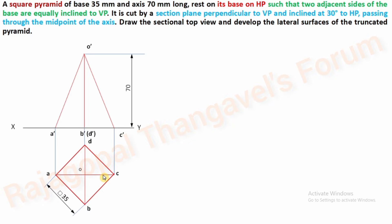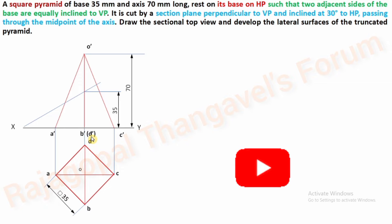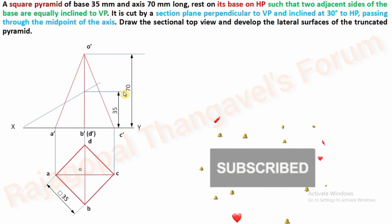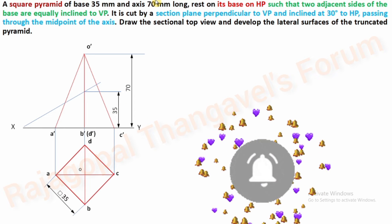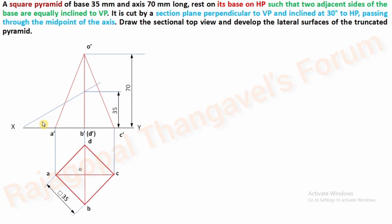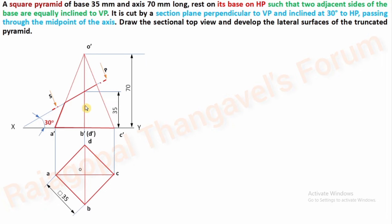ABC is visible; D corner is invisible, so D is marked in brackets. Now referring to the midpoint: the midpoint of the axis is at 35 mm (half of 70 mm). Through that point, draw a section plane at an inclination of 30 degrees — draw it as a continuous thick line followed by dot and dash. The top is the removed portion and the bottom is the remaining portion of the solid.